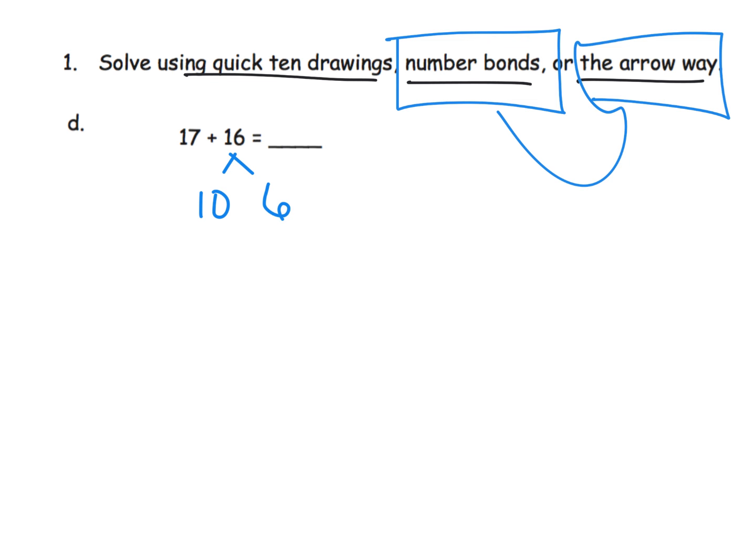And then I'm going to add the tens. So we've got 17 plus 10. That gives us 27. Then I'm going to take that 27. And we're going to add in the final 6 that we have sitting out there. And 27 plus 6 is 33.